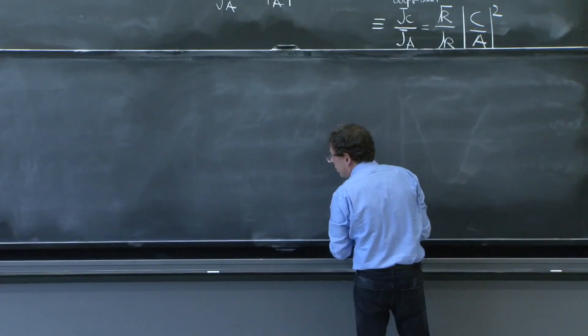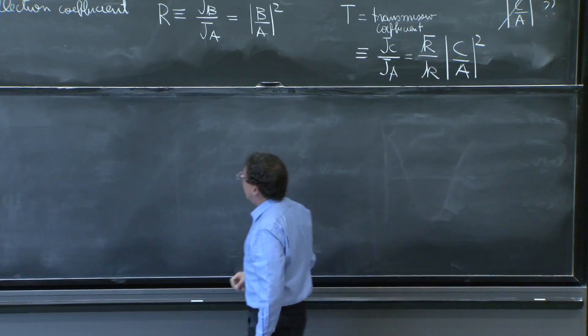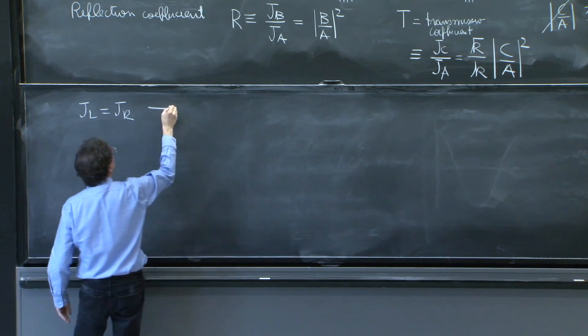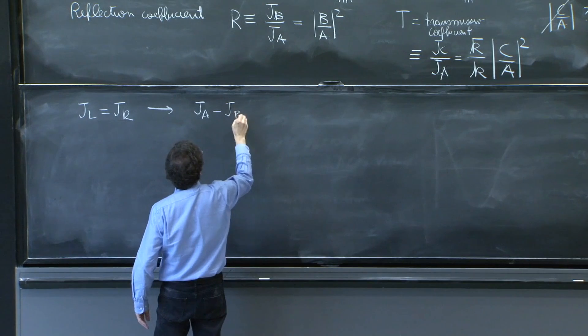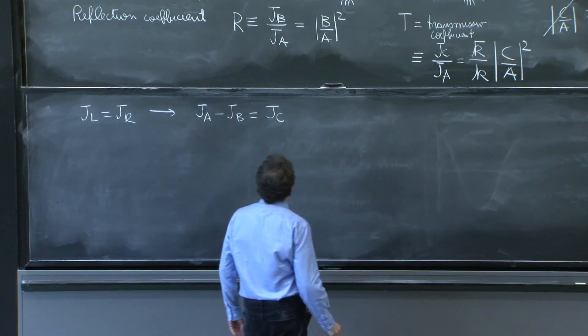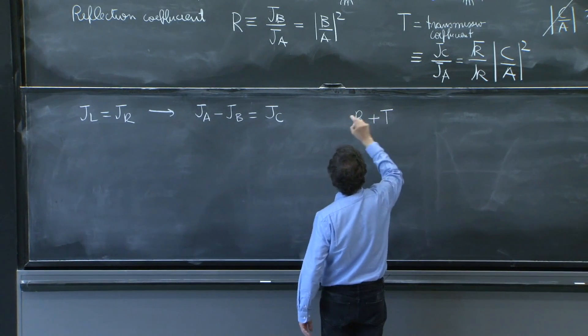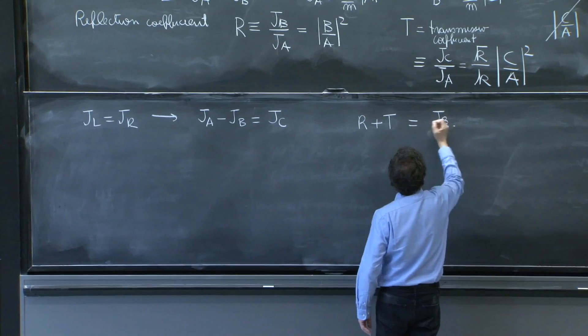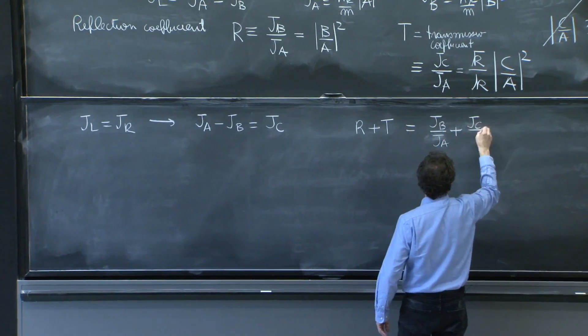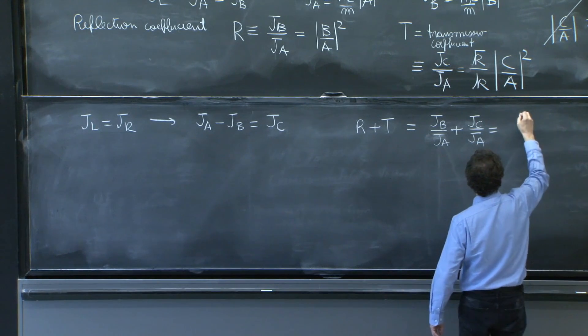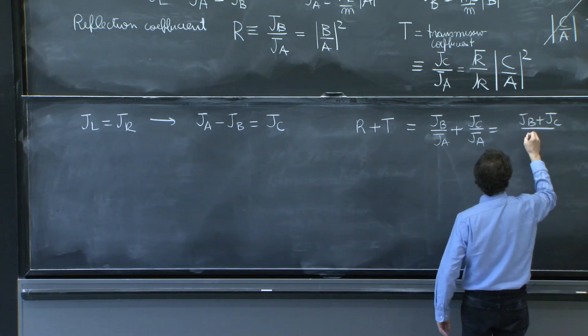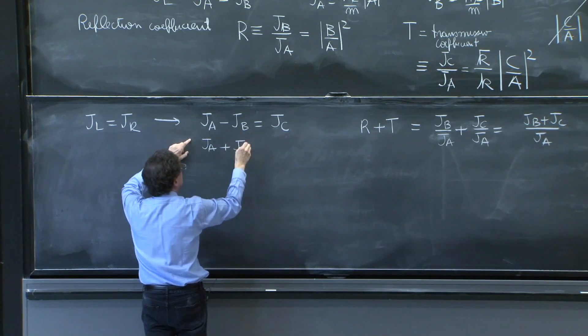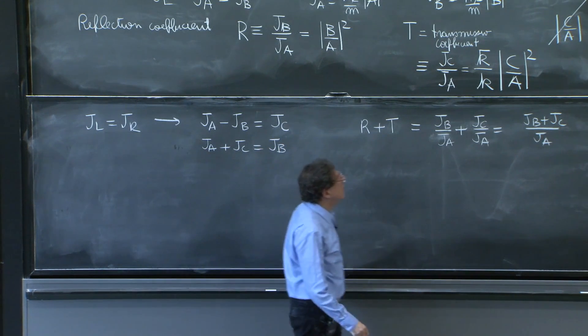And these definitions, because after all, this is a definition, make some nice sense. Because you have jl, we said is equal to j right. But jl is ja minus jb is equal to jc. And therefore, r plus t, the reflection coefficient, plus the transmission coefficient, which is jb over ja, plus jc over ja is equal to jb plus jc over ja. And you see here that ja plus jc is indeed equal to jb minus.